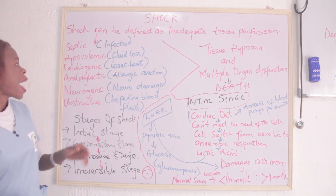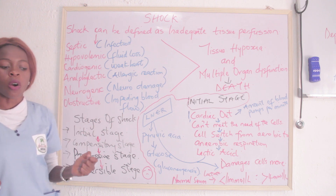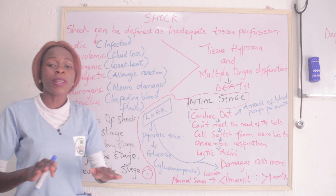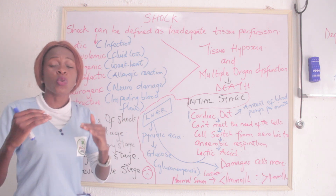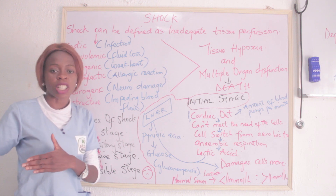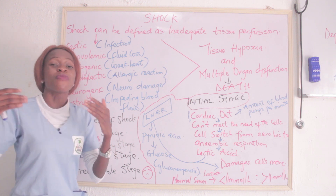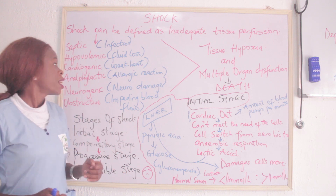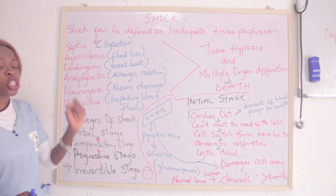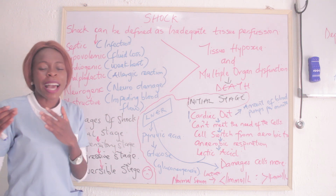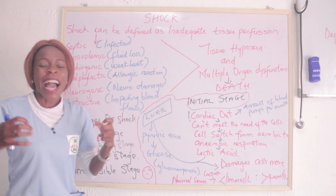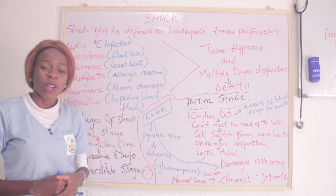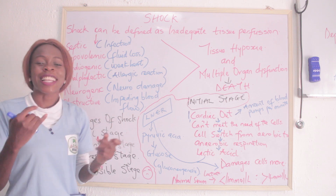The second is hypovolemic shock. Whenever you hear hypovolemic shock, it simply means there is reduced fluid volume — it could be as a result of hemorrhage or bleeding. Then the other is cardiogenic shock. In cardiogenic shock, what has been affected is the heart. The heart is so weak it is unable to pump blood into circulation, so we say cardiogenic shock has taken place.